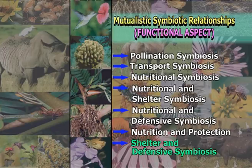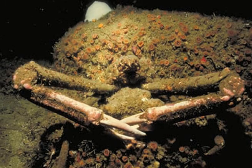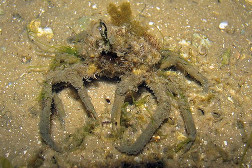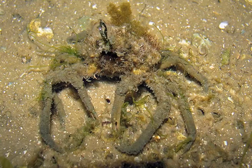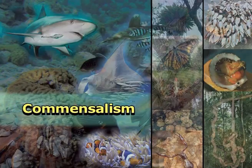One more example of a mutualistic relationship combining nutrition and protection is that of the oxpecker bird and large thick-skinned animals like African buffalo, elephants, rhinoceroses or zebras. Oxpeckers ride on the backs of these animals and eat ticks and other parasites that live on their skin. The oxpeckers get food and the animals get pest control. When predators approach, the oxpeckers fly upward and scream a warning. Additionally, in shelter and defensive symbiosis, spider crabs live on the ocean floor with greenish-brown algae on their backs, camouflaging them from predators while giving the algae a good place to live.